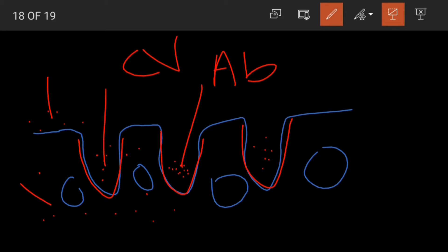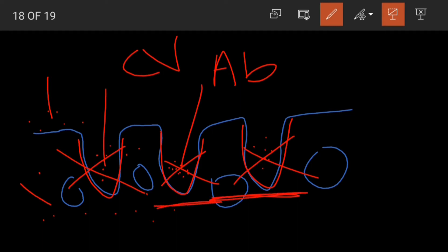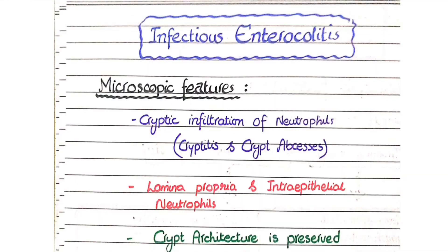This is important because in inflammatory bowel diseases such as Crohn's disease or ulcerative colitis, long-term inflammation causes destruction of these cryptic structures. But in infective enterocolitis, the acute inflammation is not very long-lasting, so crypt architecture is characteristically preserved.